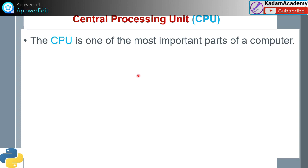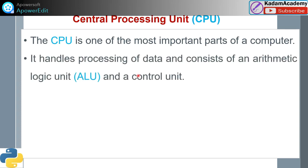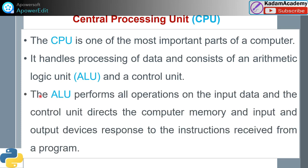Next is the CPU — the central processing unit — which is one of the most important parts of the computer. It handles the processing of data and consists of an Arithmetic Logic Unit (ALU) and a Control Unit. The ALU performs all arithmetic and logic operations on the input data, while the Control Unit directs the computer memory and input/output devices to respond to instructions.